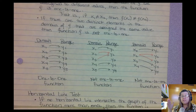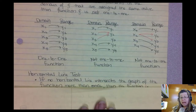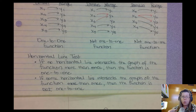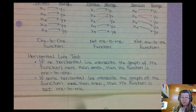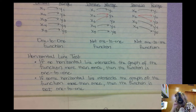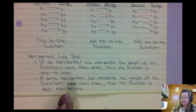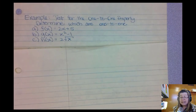Just like we have the vertical line test for testing a function, we have a horizontal line test for a one-to-one. A one-to-one function will pass a horizontal line test. To even have a chance of being a one-to-one function, it had to be a function — so it has already passed the vertical line test. If a horizontal line does not pass more than one point at any time on the graph, then it is a one-to-one function. Additionally, if some horizontal line can intersect more than one point, then it's not a one-to-one. It has to pass both the vertical line test and the horizontal line test.